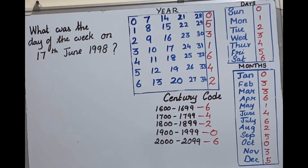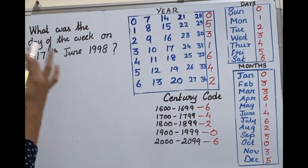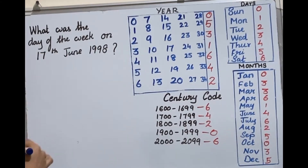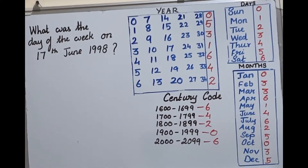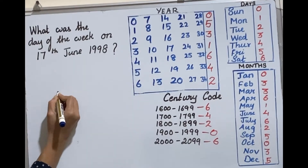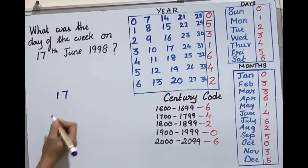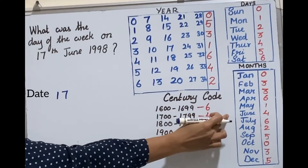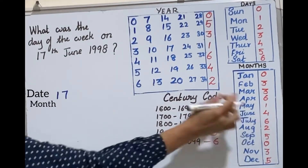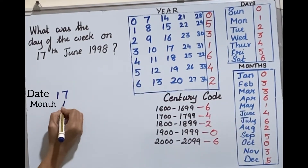Let's see how to solve this type of question. What was the day of the week on 17 June 1998? This is type 1. First, 17 is the date. The month is June, and the code for June is 4.